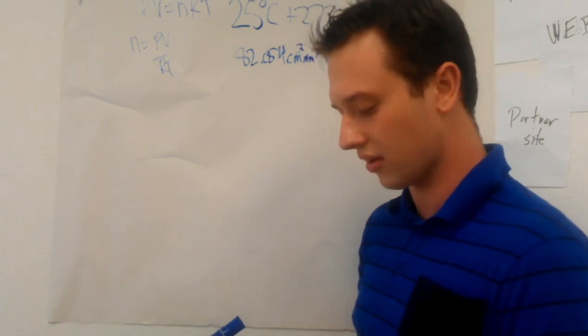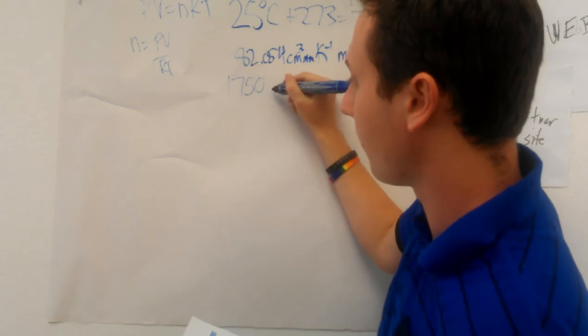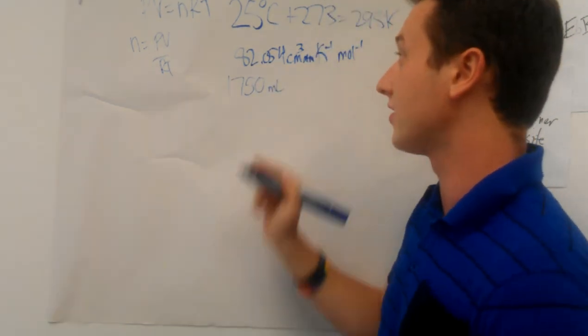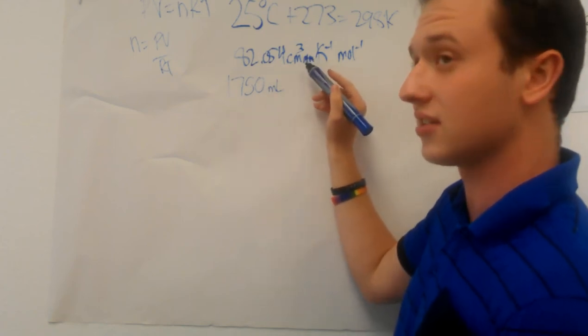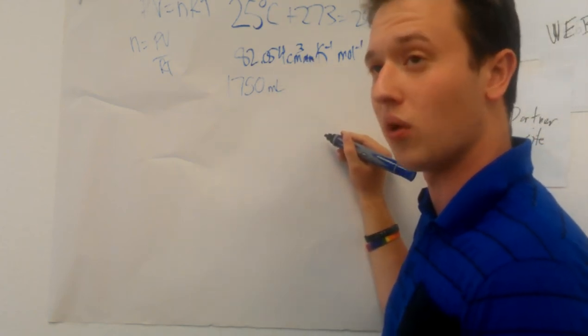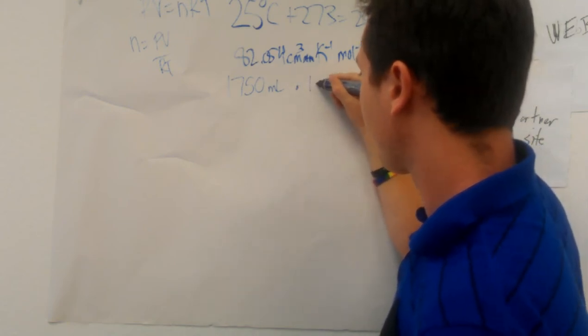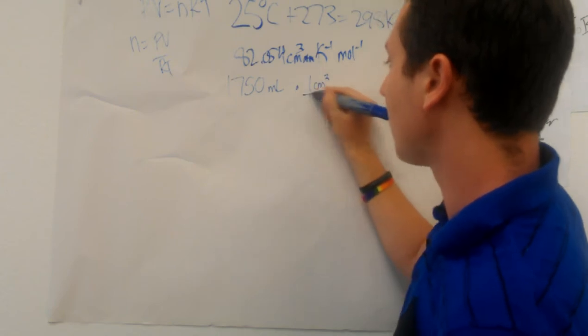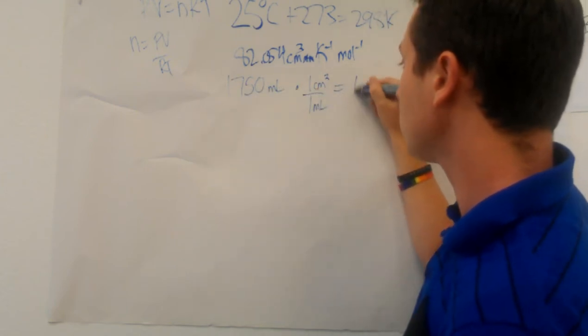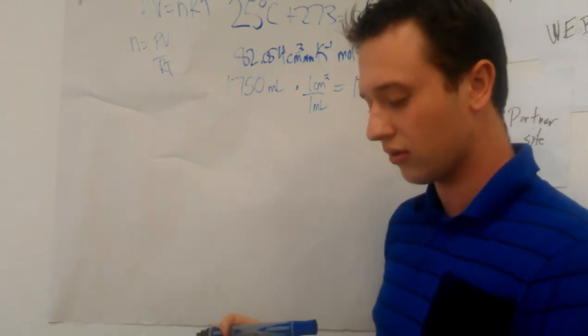Let's take a look at volume. Volume was given to us as 1,750 milliliters. We need to convert that to centimeters cubed, as is present in the R constant. Fortunately, one milliliter is equivalent to one centimeter cubed. So let's do some basic stoichiometry. One centimeter cubed over one milliliter times 1,750 equals 1,750 centimeters cubed.